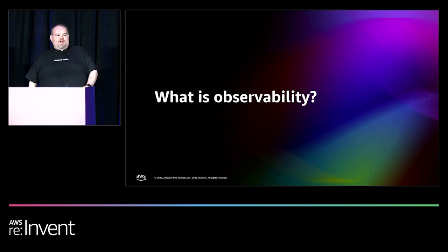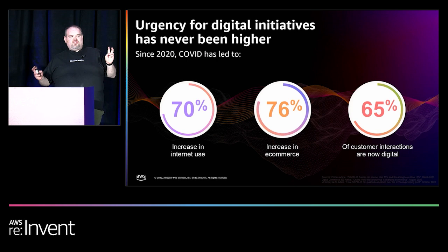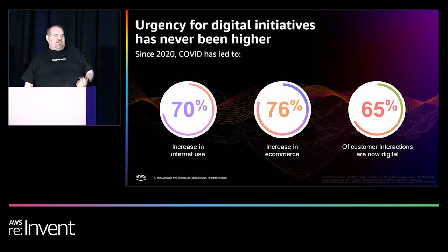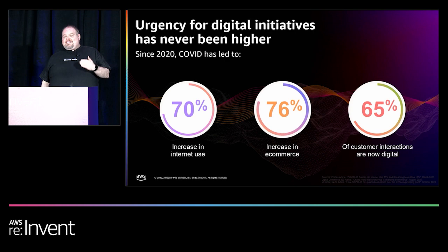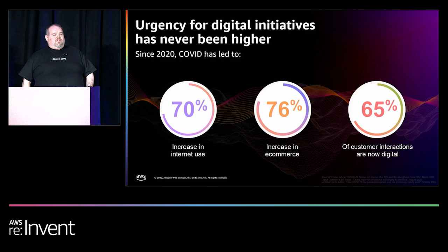Let me jump into the first topic: what is observability. But first, why do we care about observability? There is a lot more digital stuff happening in the world. Since 2020, pretty much every interaction became digital. During 2020, we saw a 70% increase in internet use and a 76% increase in e-commerce transactions. That's 65% of customer transactions now being digital — almost two thirds. Building reliable, well-performing digital infrastructure is super important.